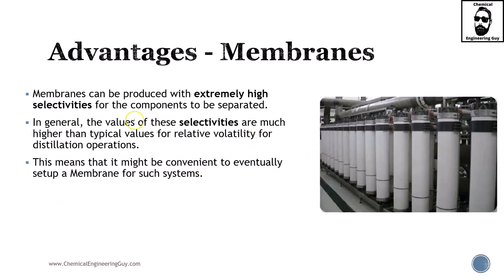Membranes can be produced with extremely high selectivities. Not only is it cheap to operate and install, but it's also very efficient for certain processes. In general, the values of these selectivities are much higher than those typically stated in conventional processes, such as distillation — specifically the volatility change — or gas absorption, the solubility change on the gas, and so on. So if you have a membrane operating at relatively convenient conditions and distillation is not the best-case scenario, definitely check out the membrane.